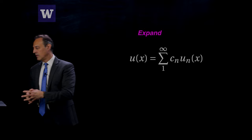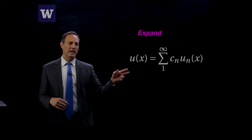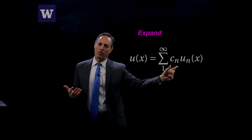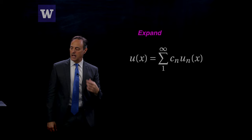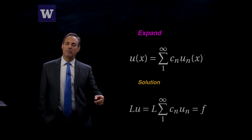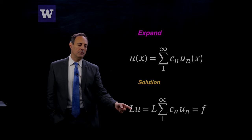Just like before, we expand: u of x equals a sum of constants times u_n of x, where u_n of x are the eigenfunctions. The only thing left to determine is how to get these coefficients C_n. So let's figure out how to get those. I take LU — I'm solving LU equals F — L times u, which is this expansion, equals F. I'm going to use the same trick as before: take the inner product of this on both sides with respect to u_m.